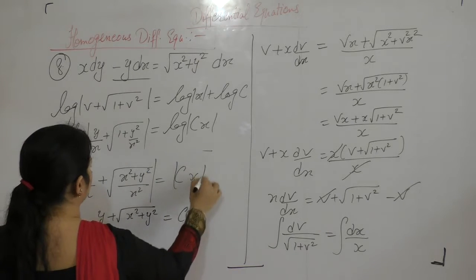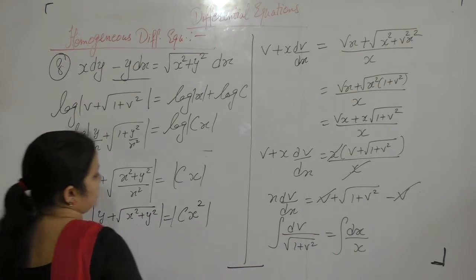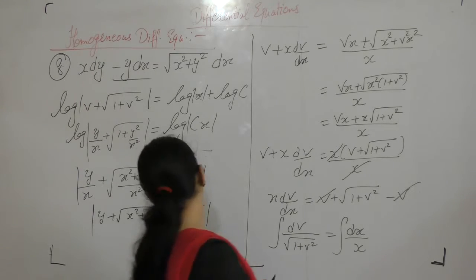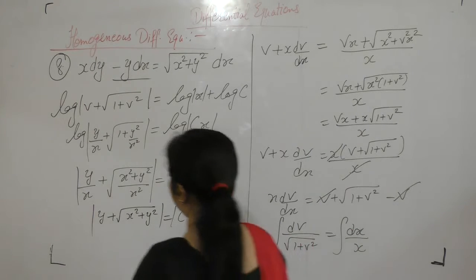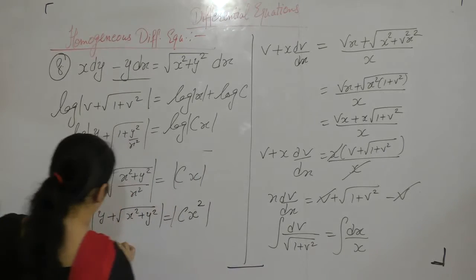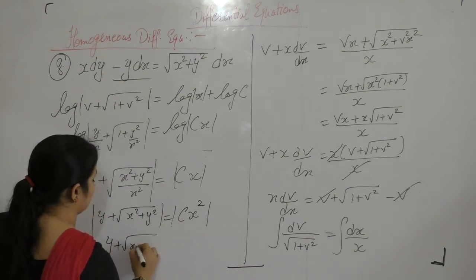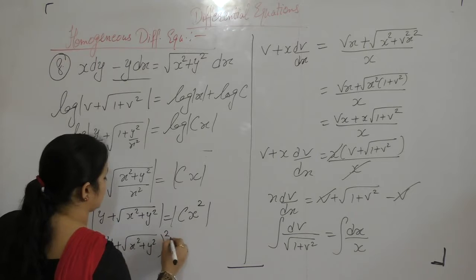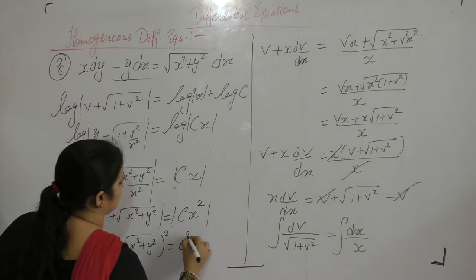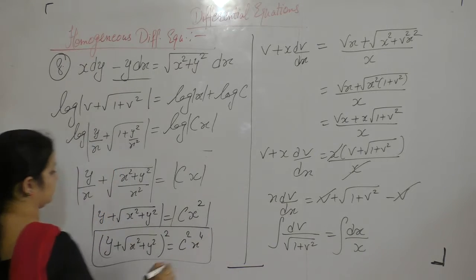There is a modulus on both sides. To remove the modulus, we square both sides, giving the final result: y plus square root of x squared plus y squared, squared, equals C squared x to the power 4.